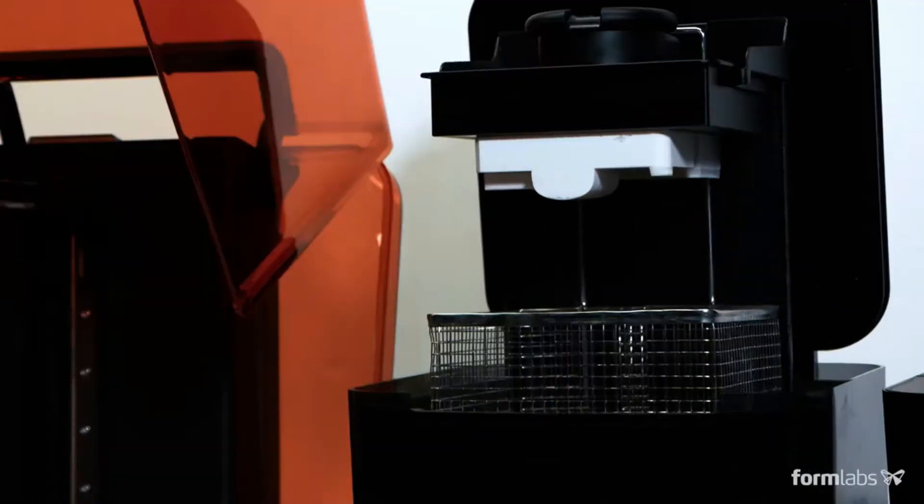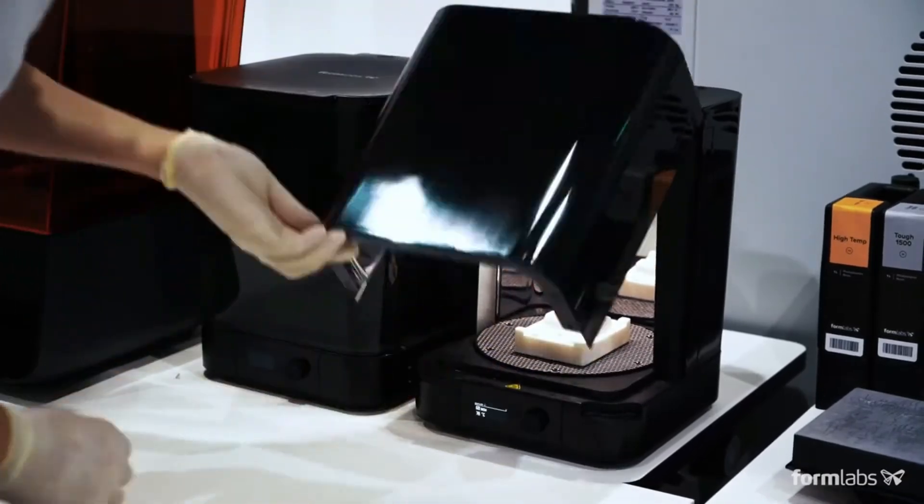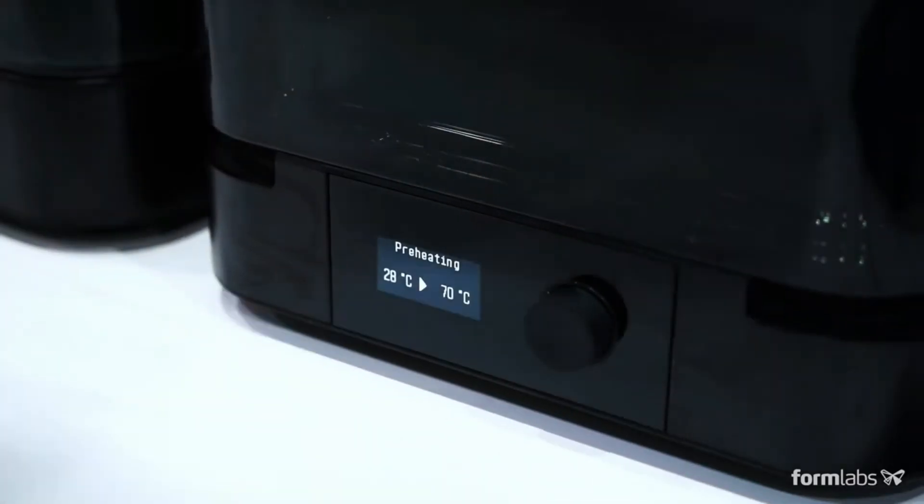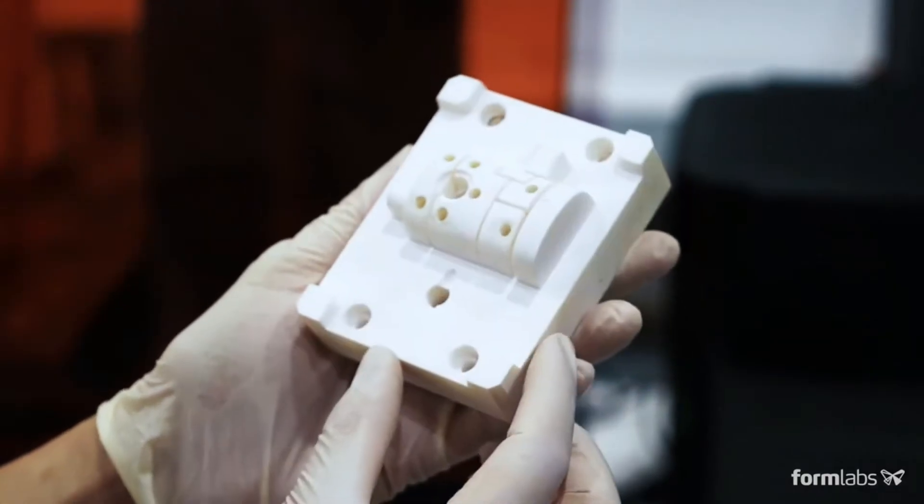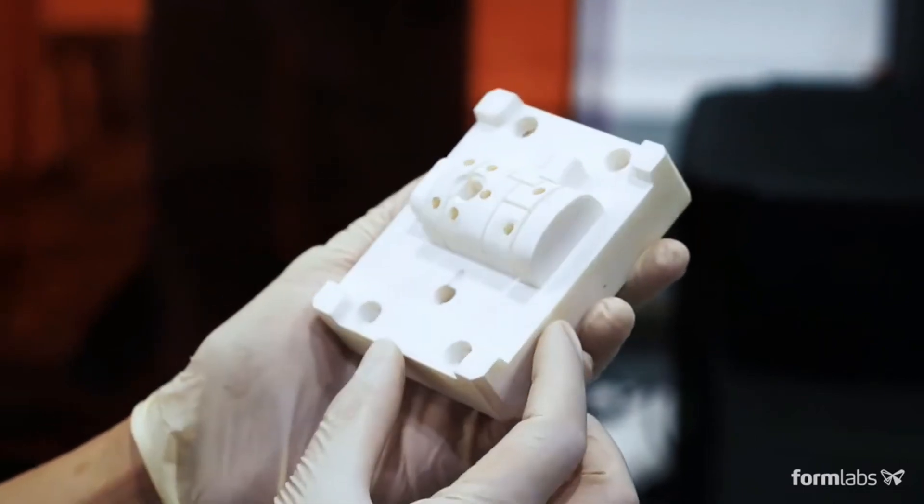All SLA 3D prints require washing and post-curing to bring parts to their optimal mechanical and thermal properties. In just a few hours, your 3D printed mold is ready for assembly.